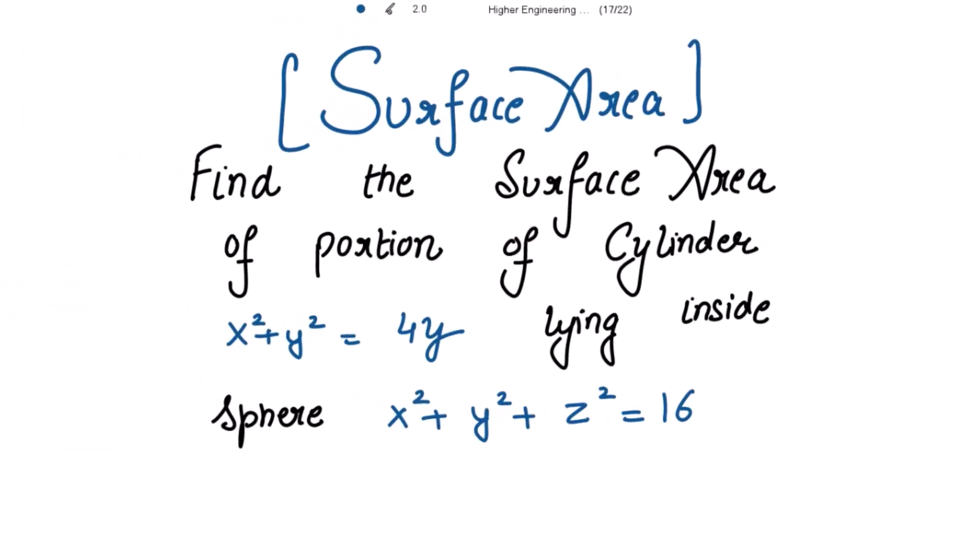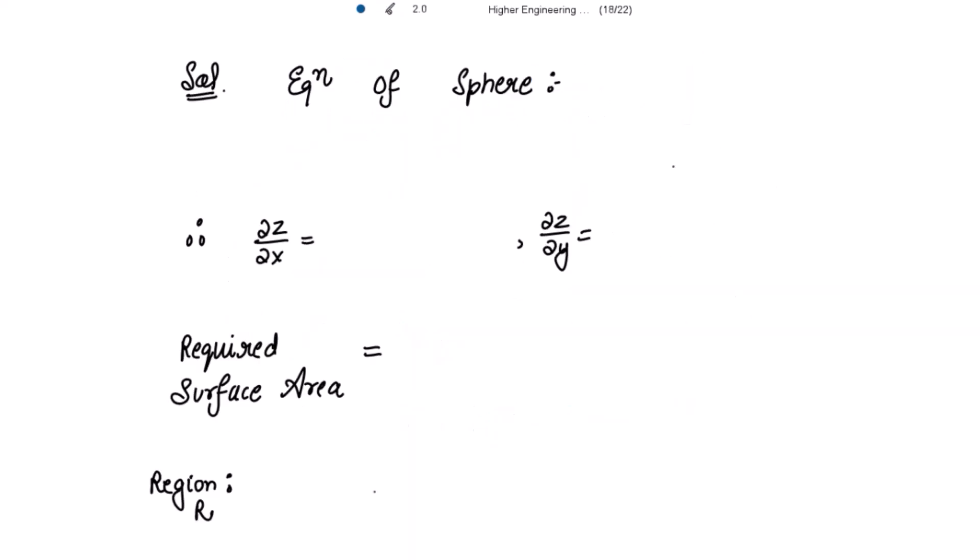Find the surface area of the portion of the cylinder x² + y² = 4y lying inside the sphere x² + y² + z² = 16.